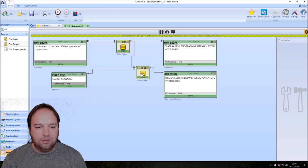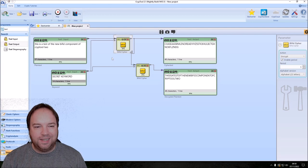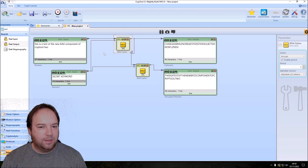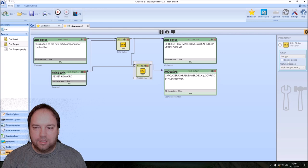Now, as I said, we can change a few things here. For instance, we can enable the period, and the period is the size of blocks in which we cut our plaintext. And then we encrypt these blocks individually. And when I press play now, you can also see that the second component, of course, can't decrypt our ciphertext because we have also to enable the period. Now it should work again. This is a test of the new bifid component of CrypTool 2.